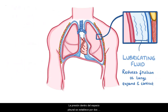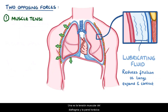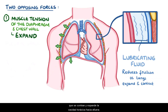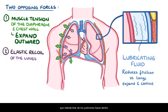Pressure within the pleural space is established by two main opposing forces. One is the muscle tension of the diaphragm and the chest wall, which contract and expand the thoracic cavity outwards. And the other is the elastic recoil of the lungs, which try to pull the lungs inward.